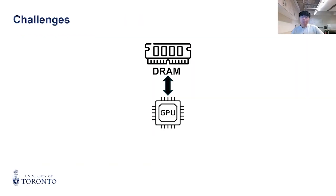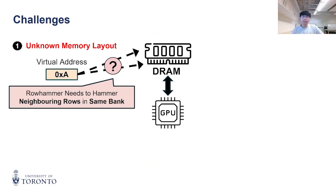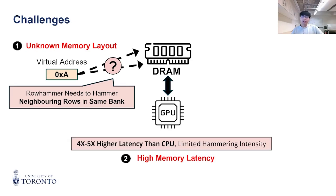There are three main challenges in launching Rowhammer attacks on GPUs. First, we work with virtual memory, meaning we don't know which row or which bank an address maps to. Second, GPUs have a very high memory latency — about 5x that of CPUs — making it very hard to rapidly trigger ACTs.